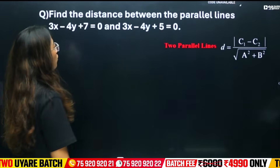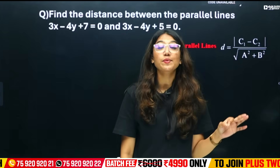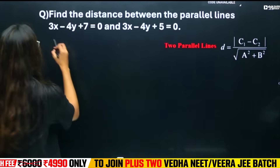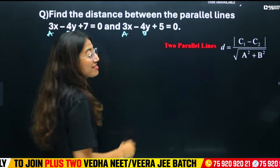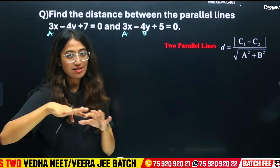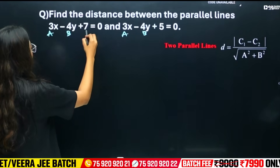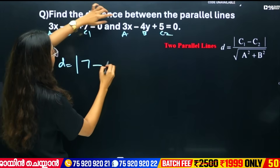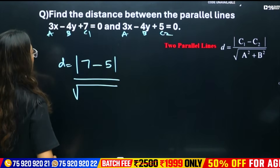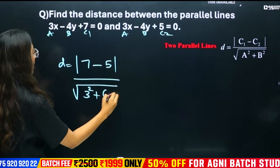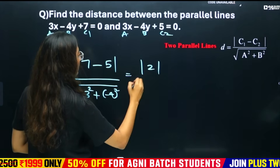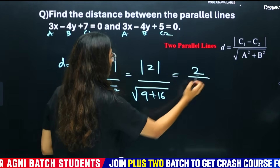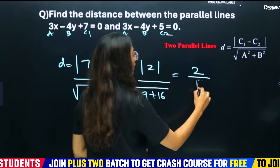Distance between 2 parallel lines: the formula is |c₁ - c₂| / √(a² + b²). That is |7 - 5| / √(3² + 4²) = 2 / √(9 + 16) = 2 / √25 = 2/5 units.